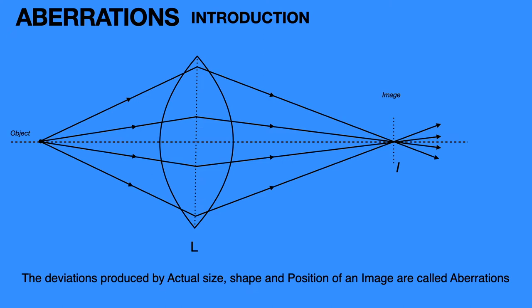That means when the image is formed for the object, if the image with respect to the object contains any deviation in size, shape, or position, this is called aberrations. Here, deviation generally means a change.